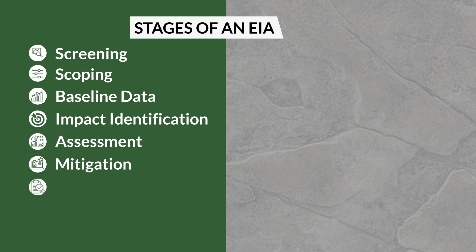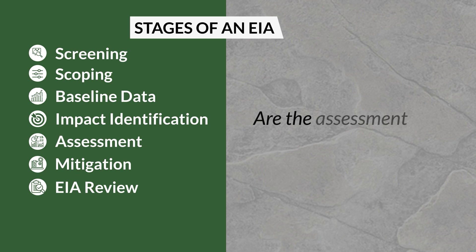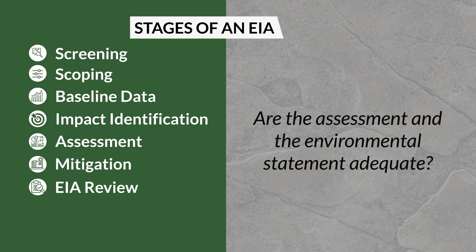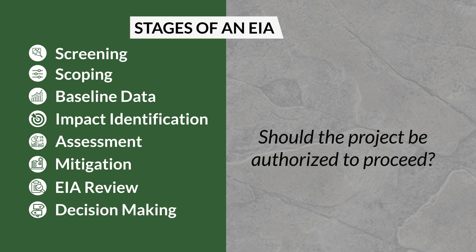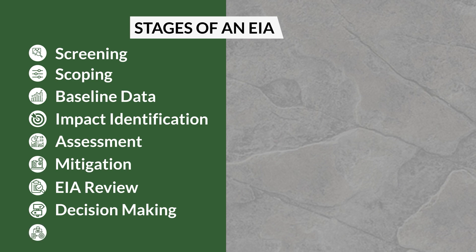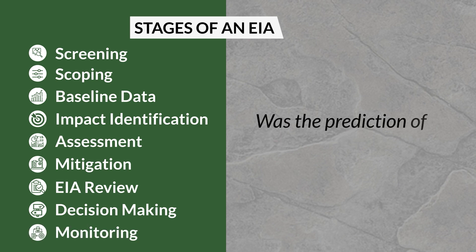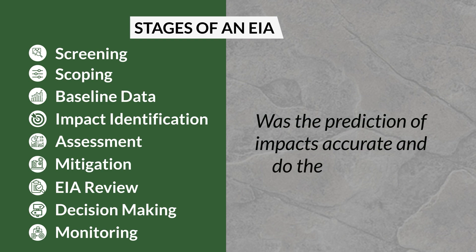Stage 7: EIA review — Are the assessment and the environmental statement adequate? Stage 8: Decision-making — Should the project be authorized to proceed? Stage 9: Monitoring and auditing — Was the prediction of impact accurate and did the mitigation measures work?